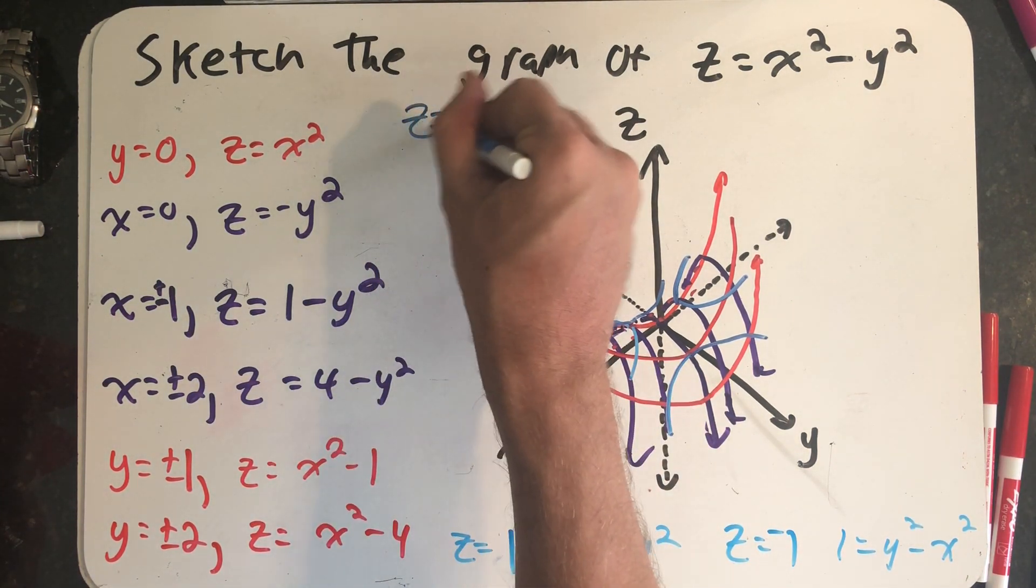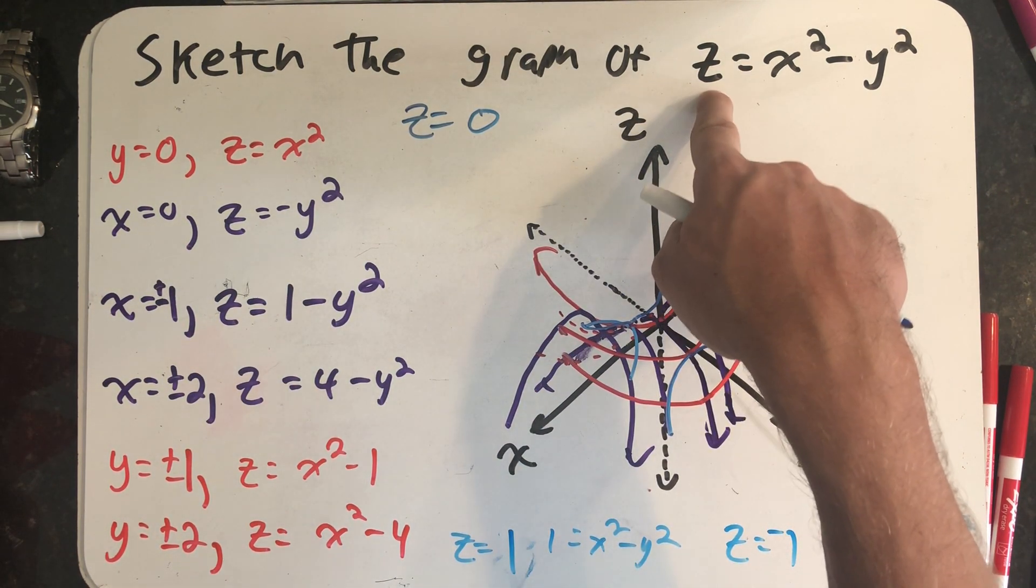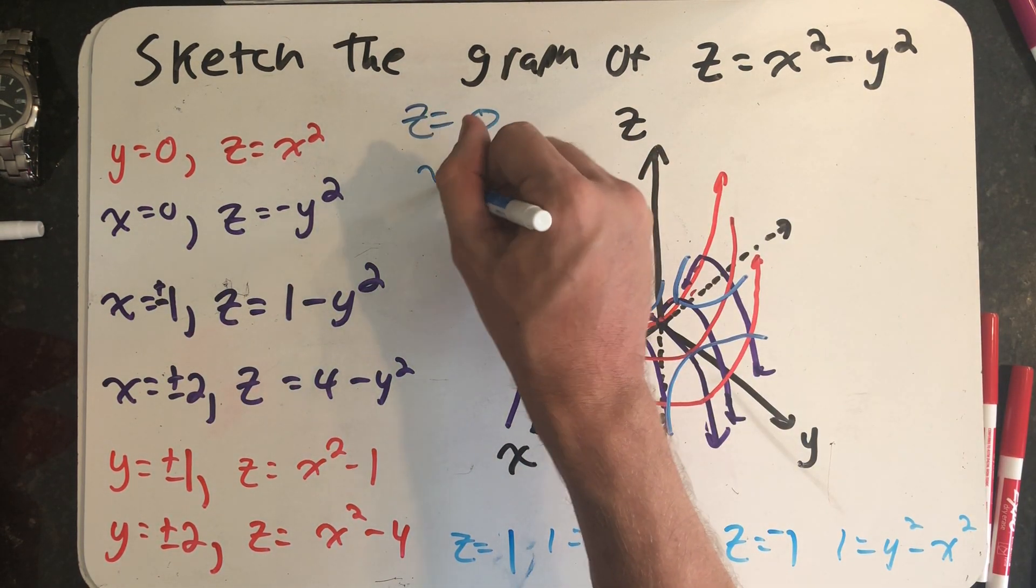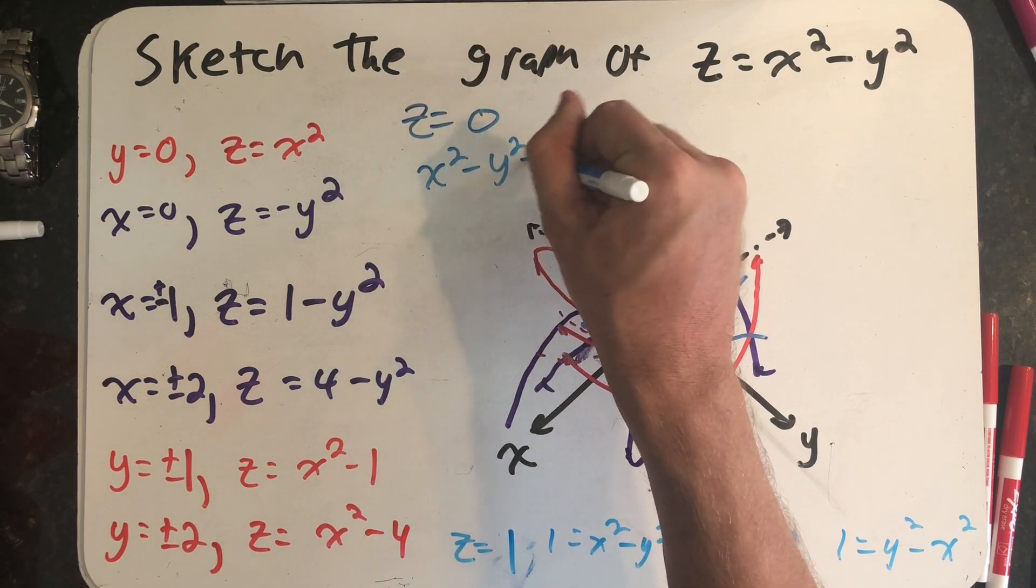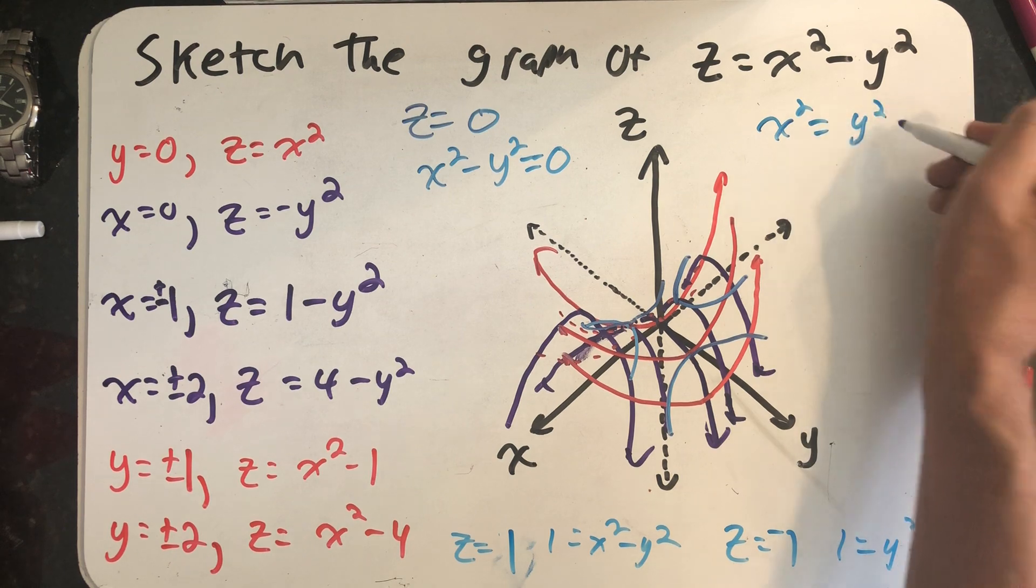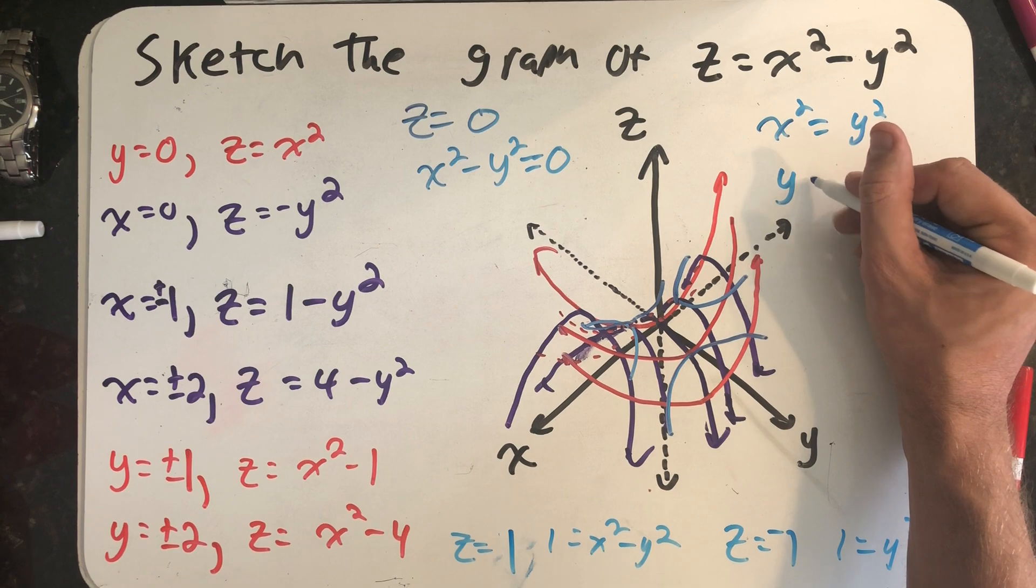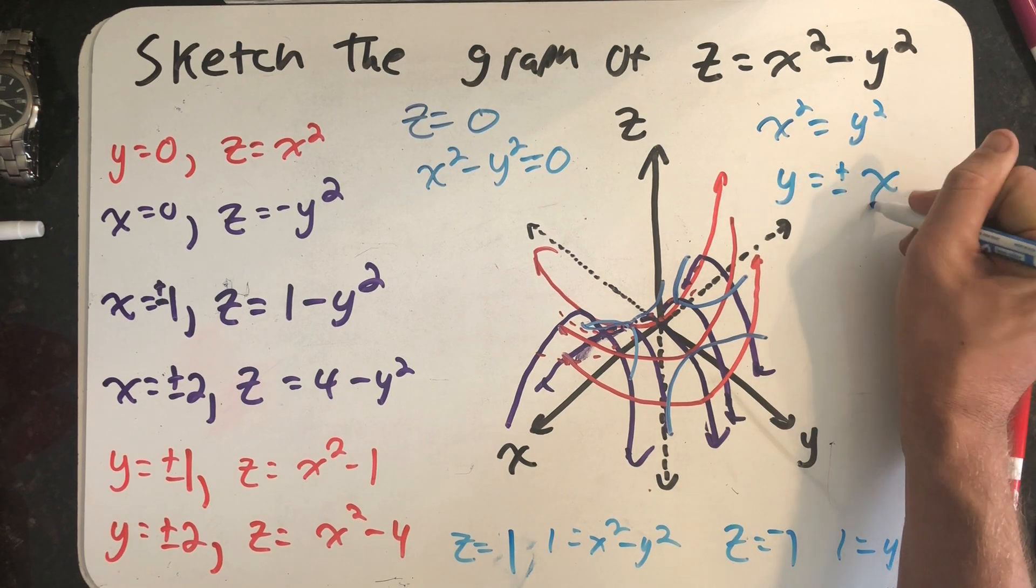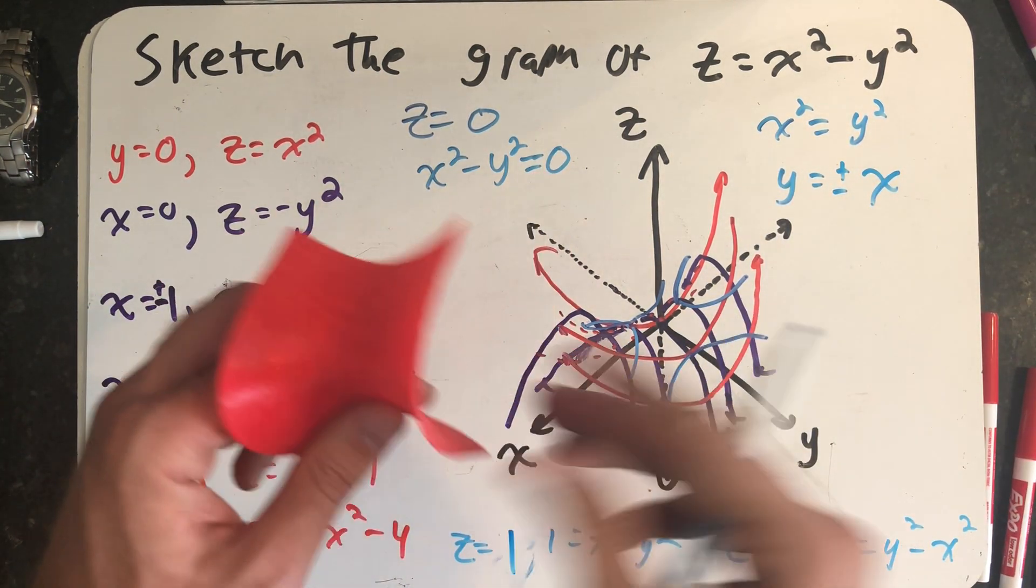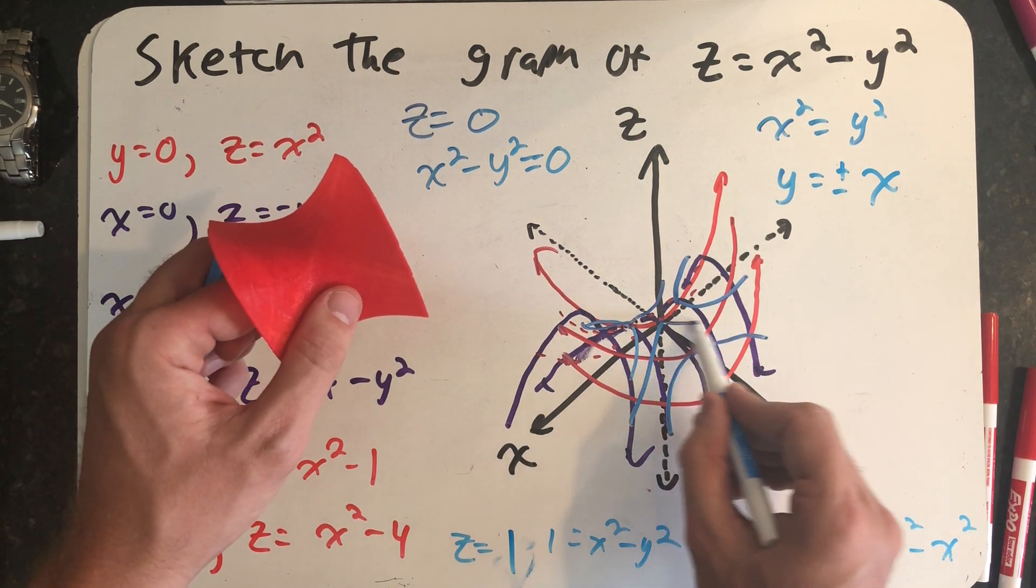Putting in a zero for z gives me x squared minus y squared equals zero, or x squared equals y squared. Taking the square root of both sides gives me y equals plus or minus x, which would just be a pair of lines crossing at the origin.